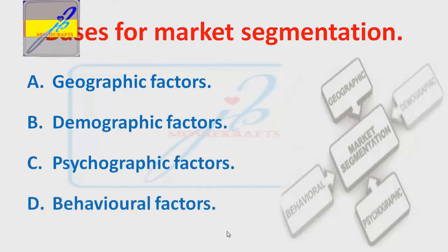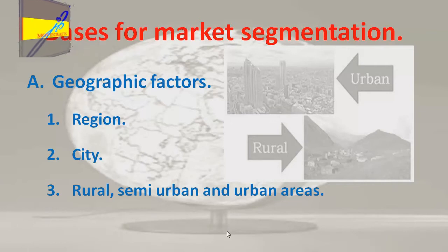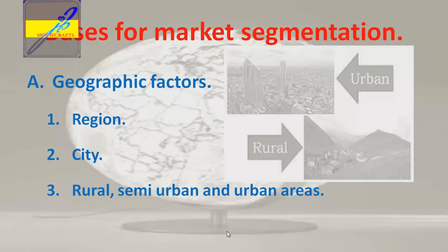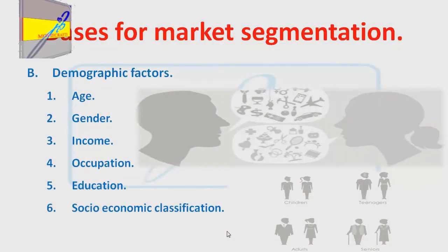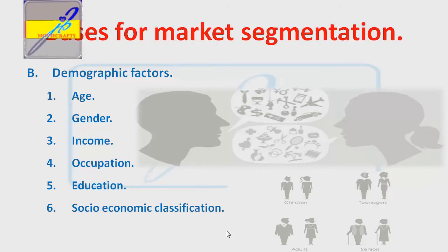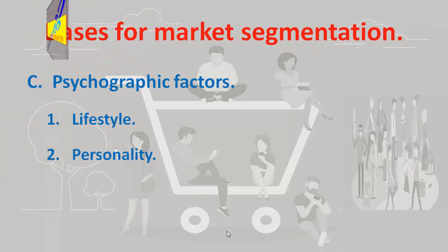Geographic factors include: region, city, rural, semi-urban and urban areas, etc. Demographic factors include: age, gender, income, occupation, education, socioeconomic classification, etc. Psychographic factors include: lifestyle and personality.